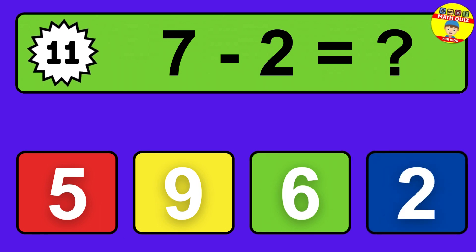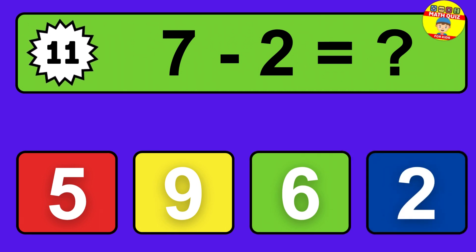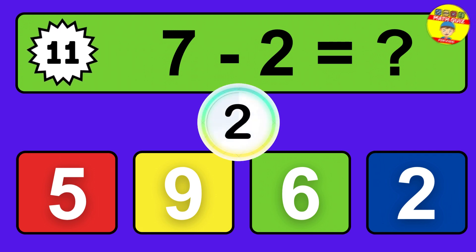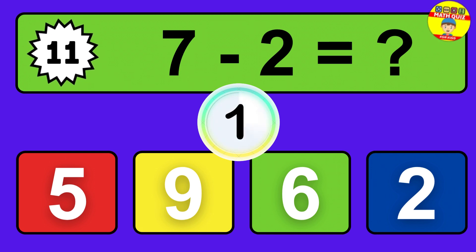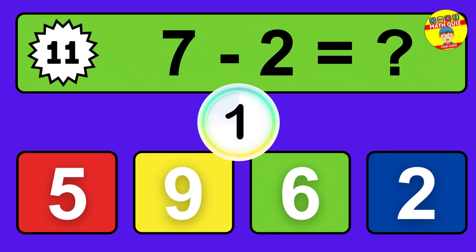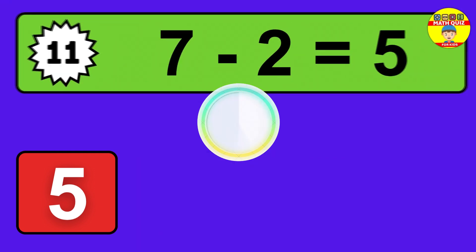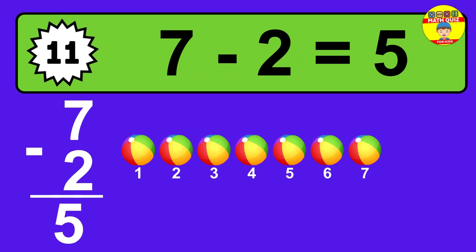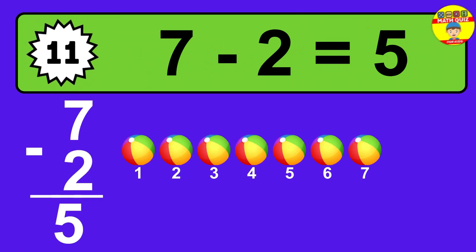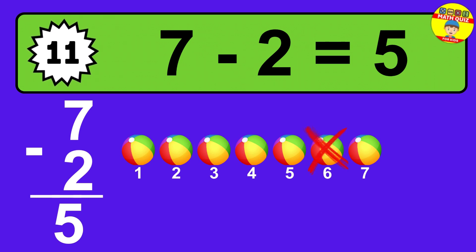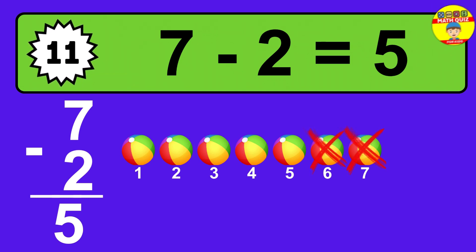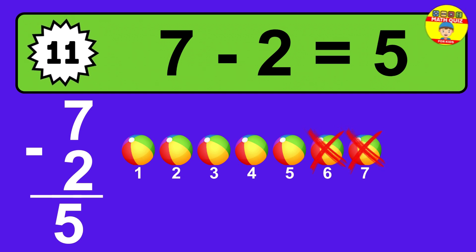Question eleven: seven minus two equals what? The answer is seven minus two is five. Let's count it. One, two, three, four, five.